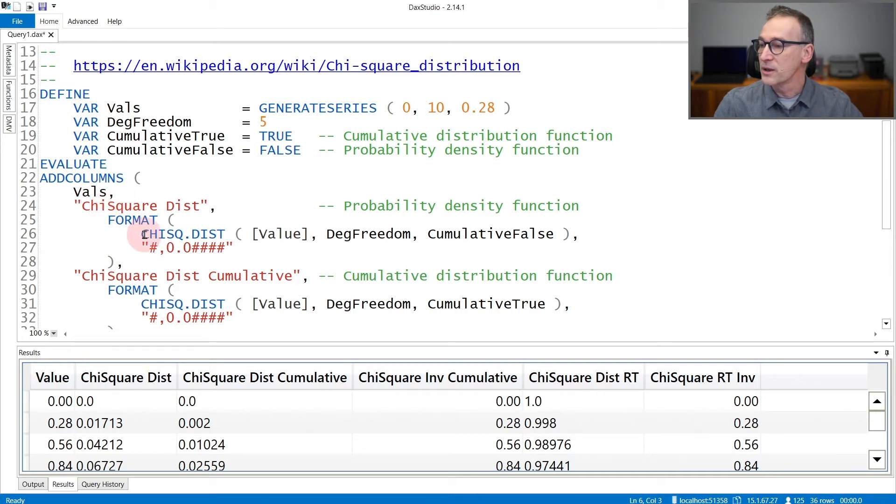For each value, I returned the CHISQ.DIST, the distribution for the value with the given degree of freedom, and the distribution function with cumulative true. You see that for 0.28, the chi-square is 0.017 and the cumulative is 0.002.